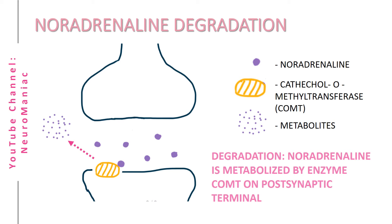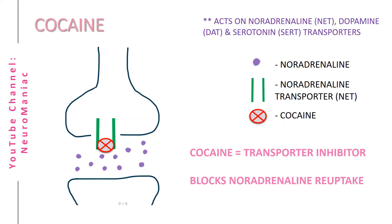The degradation process leads to a final metabolite called VMA, short for vanillylmandelic acid, which is a metabolite excreted in the urine.